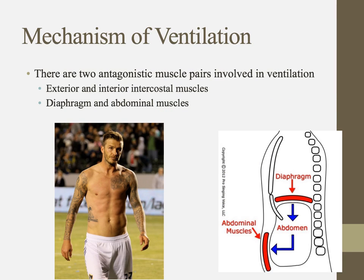Your interior and exterior intercostal muscles are only one of two antagonistic muscle pairs in this ventilation system. The other one is the diaphragm and abdominal muscles. Here we're looking at a cross-section of the body — here's your spine and chest, your dorsal and ventral sides. Your diaphragm runs separating your chest cavity and your abdominal cavity, and then your abdominal muscles are here. When one contracts, the other has to relax, so on and so forth. The diaphragm runs along here, and the abdominal muscles are in this region — an antagonistic muscle pair.